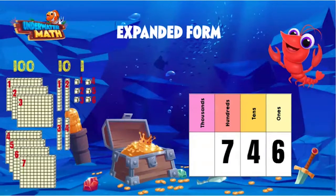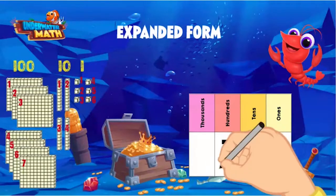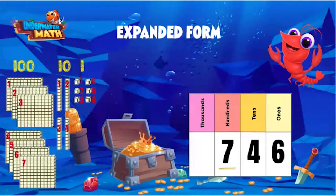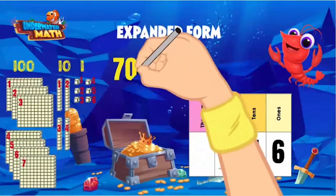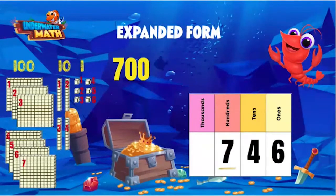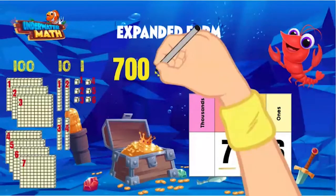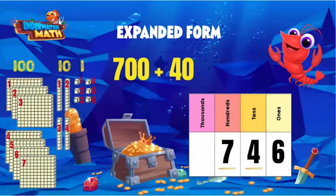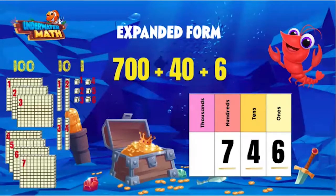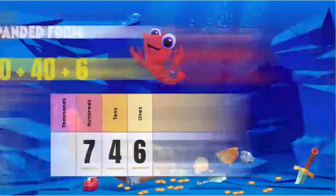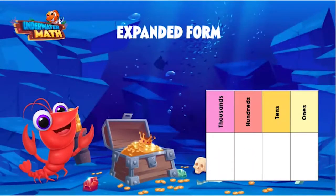To write it in expanded form, we'll start with our greatest value digit on the left. The seven is in the hundreds place, so it has a value of 700. Plus the four, which is in the tens place and has a value of 40. Plus the six, which is in the ones place and has a value of 6. We're done — 746 in expanded form is 700 + 40 + 6.